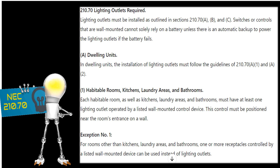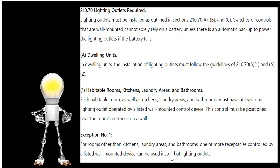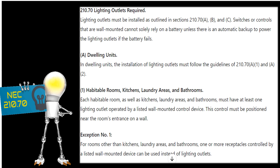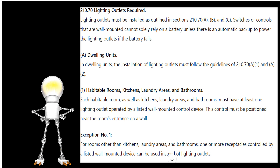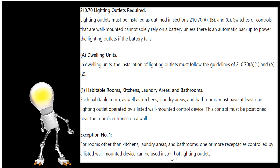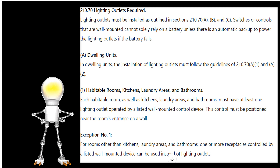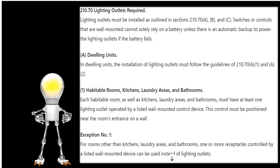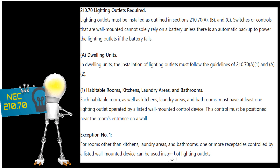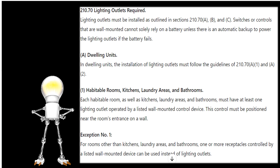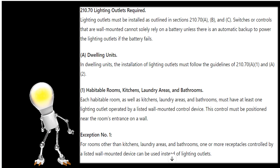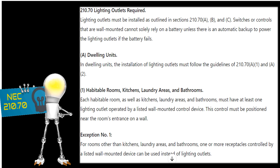Let's look at Exception 1. For rooms other than kitchens, laundry areas, and bathrooms, one or more receptacles controlled by a listed wall-mounted control device can be used instead of lighting outlets. So in any of the other rooms listed in Part 1, you can use a receptacle controlled by a general snap switch or a listed wall-mounted control device — whatever that looks like now or in the future.